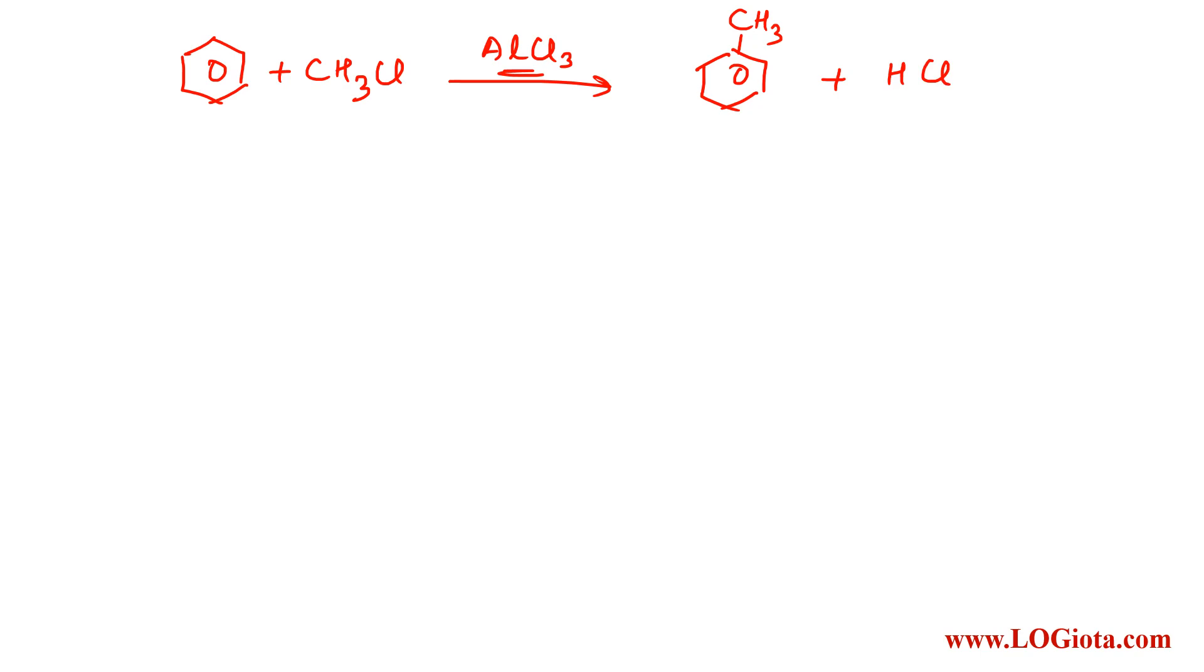Now let's see what is so special about AlCl3 that it acts as a Lewis acid. Starting from the basics, the electronic configuration of aluminum is [Ne] 3s² 3p¹.